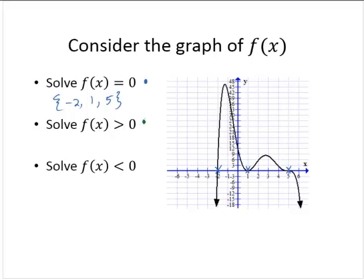Now solve f of x is greater than zero — literally, where on the curve is the function above the x-axis? Along this part of the curve that I'm marking in green, and along this part of the curve. So what are the x values that made the function greater than zero? They were the x values between those x-intercepts we marked earlier. The solution for f of x greater than zero is the interval negative two to one union one to five. Notice that we cannot include one in that interval because when x is one, the function is zero.